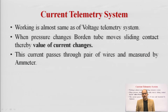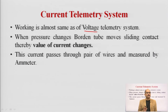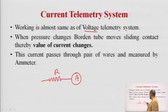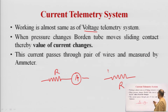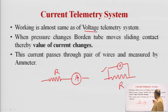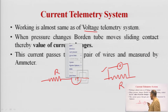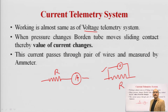The working of the current telemetry system is the same as the voltage telemetry system, with only one key difference. When you want to measure current in any resistance, you connect the ammeter in series. When you want to measure voltage across any resistance, you connect the voltmeter in parallel. In the current telemetry system, the measuring unit is connected in the series part of the circuit.